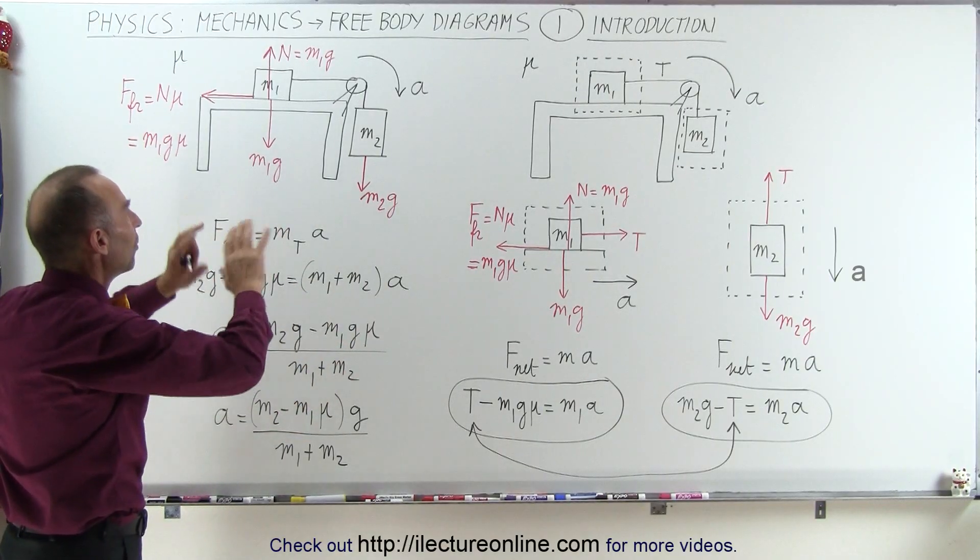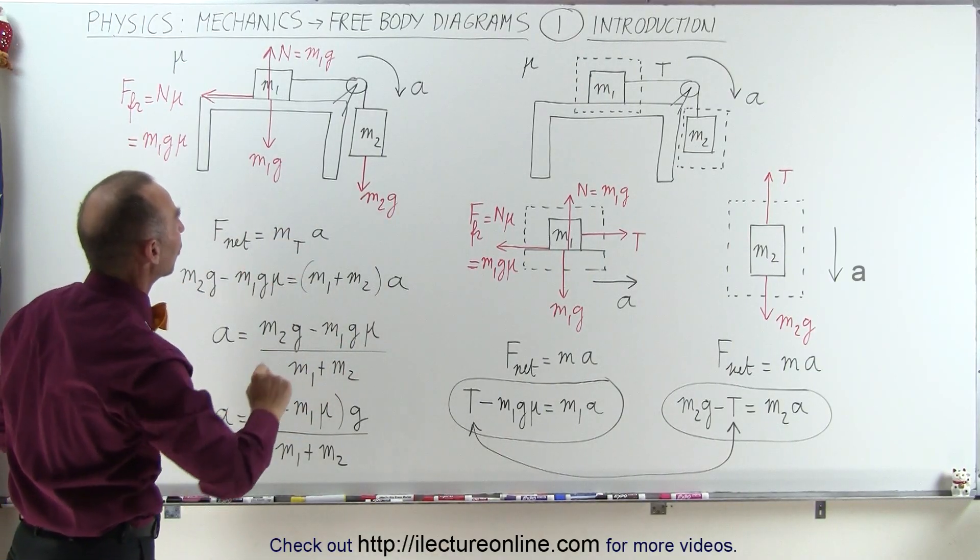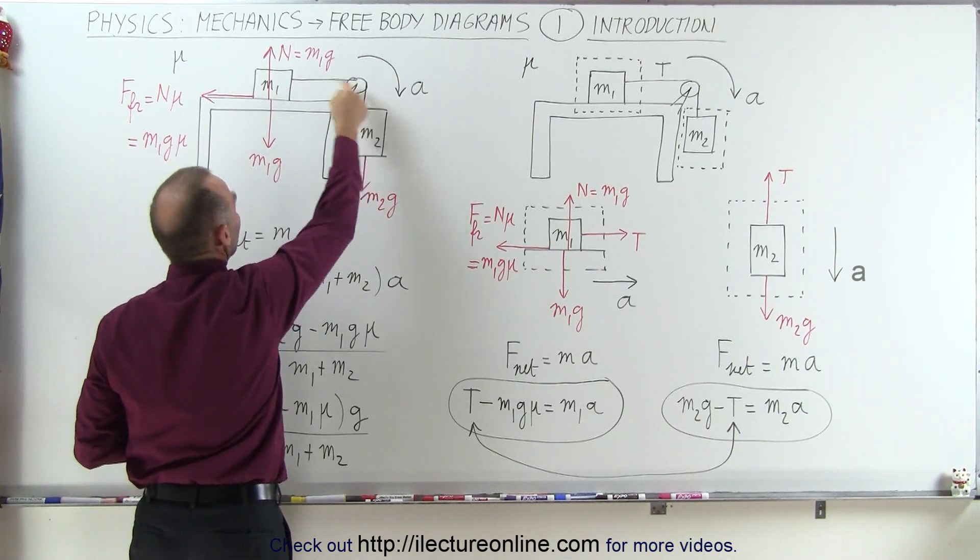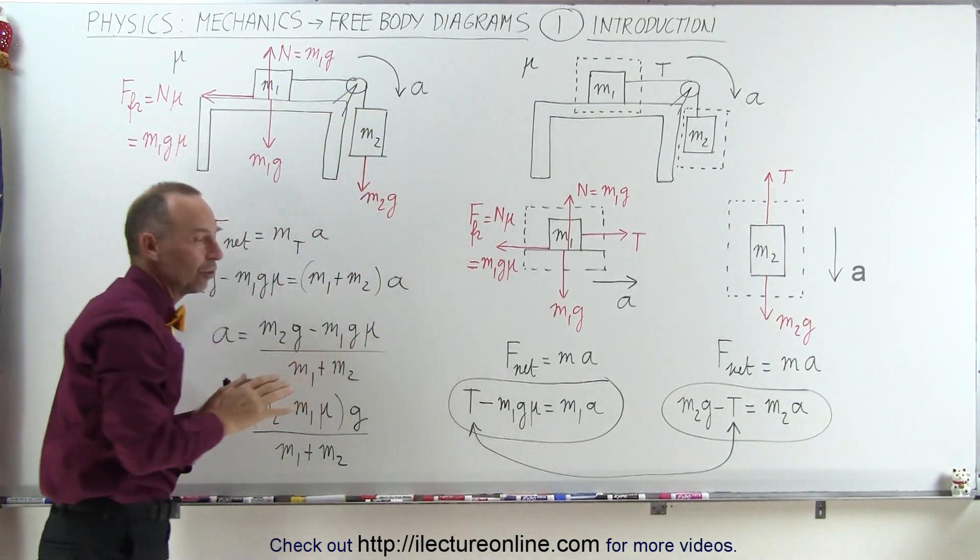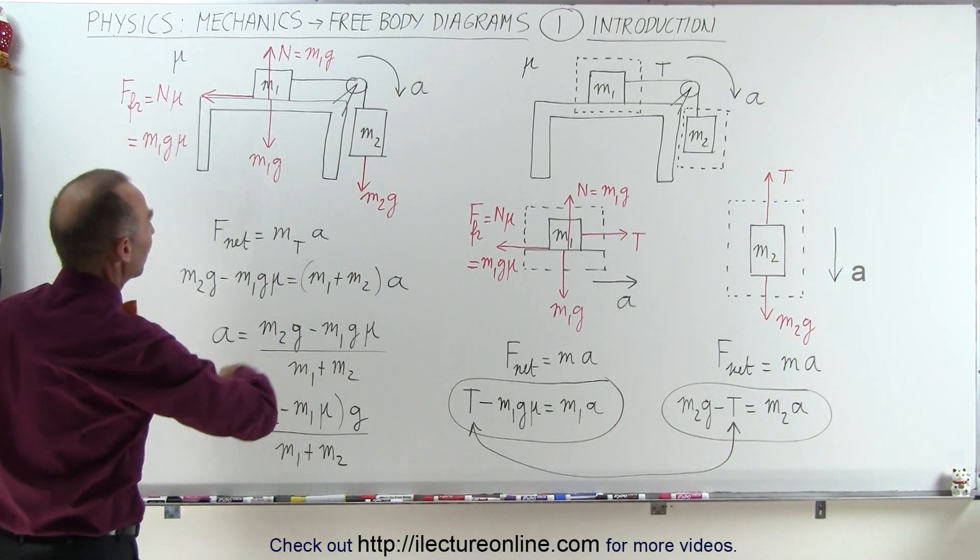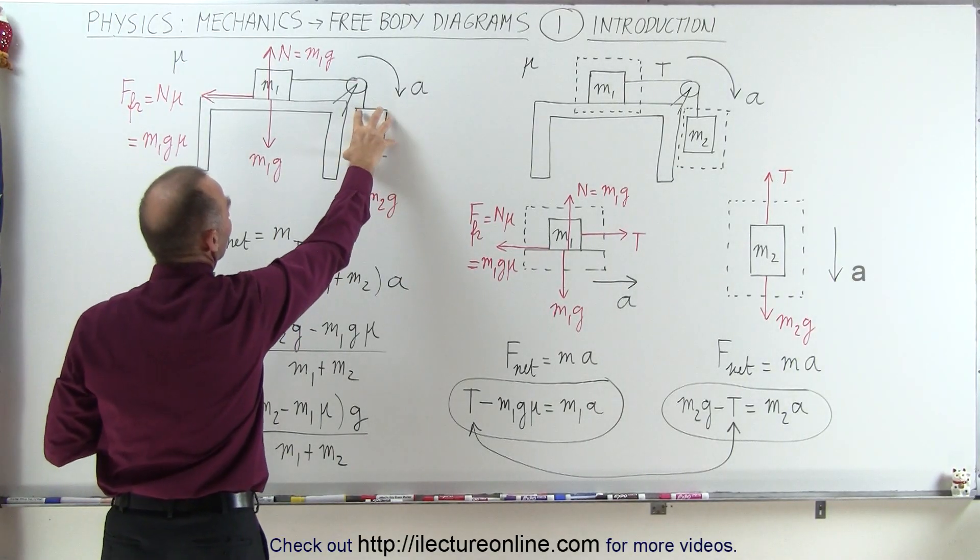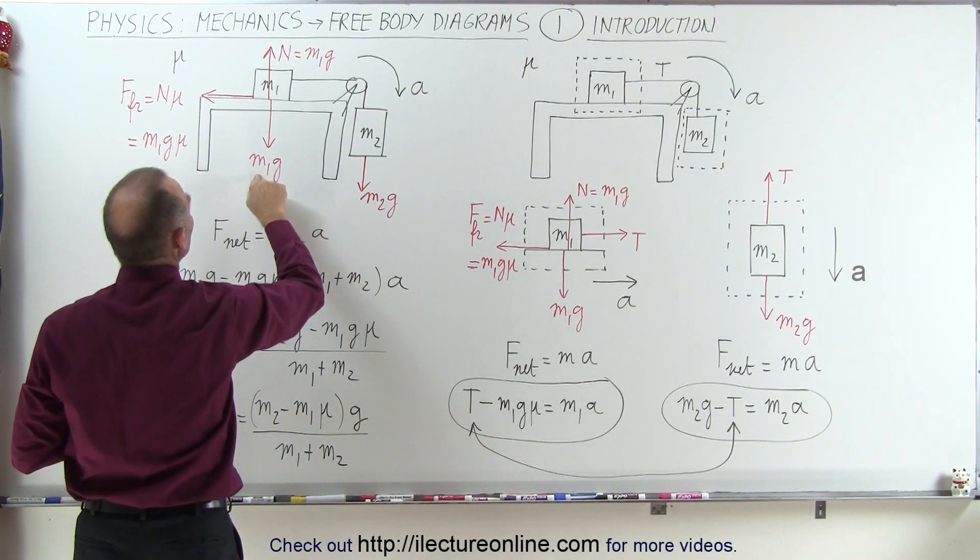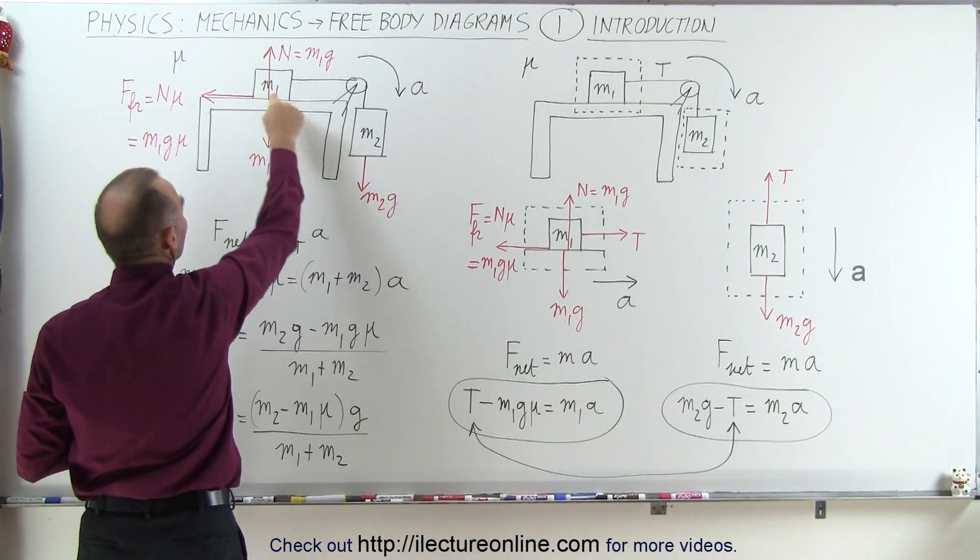We do not consider internal forces and the tension on the string connecting the two masses is really an internal force. So we ignore that. So what we do is we draw all the forces. We have the m2g acting on this mass right here. We have an m1g acting on this mass because of gravity.